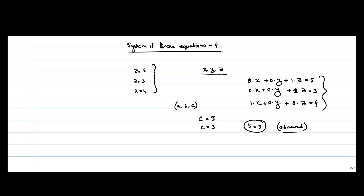So there cannot exist any point (a, b, c) which satisfies all three equations, because no point satisfies the first two equations alone. So there is no chance of the existence of any point which satisfies all three equations. Let us see the geometric representation of this system of linear equations so that we can understand why it has no solution.